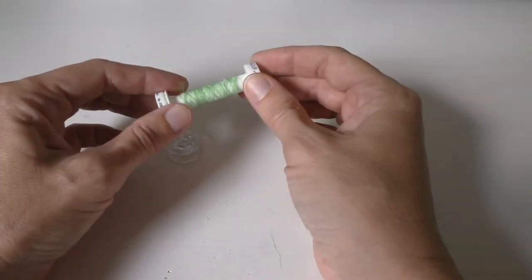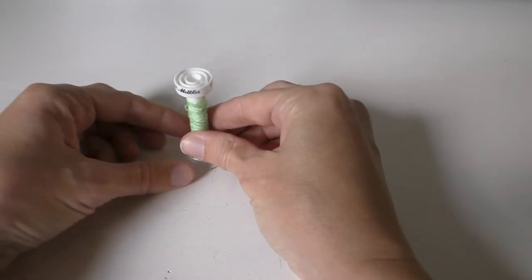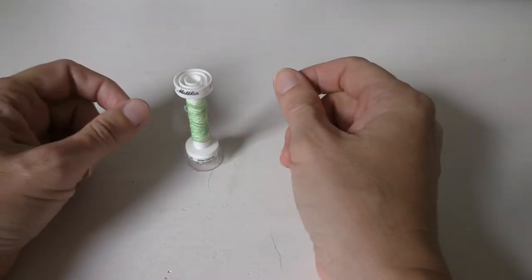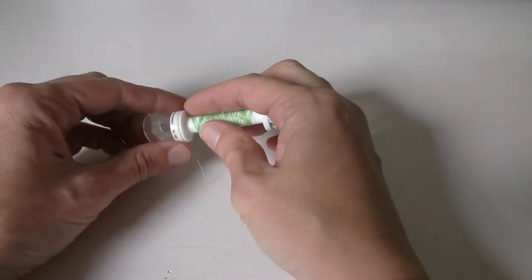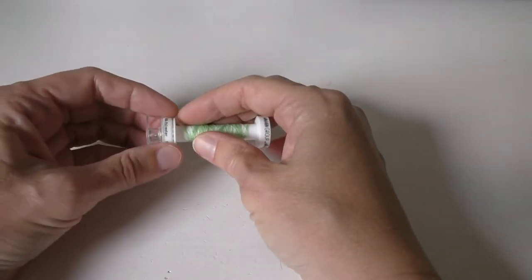And then I had seen some solutions of hot gluing the spools onto your bobbins so that you could actually wind them on your sewing machine. And I thought that was kind of a neat idea, but then I realized, well, if I do that, I'll have the bobbin still in the way on my spool stands.